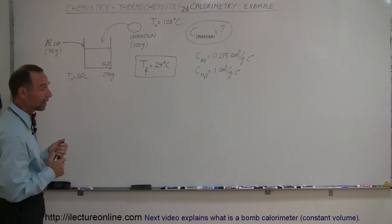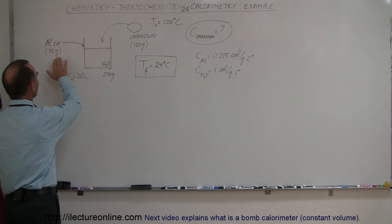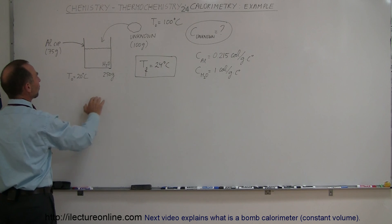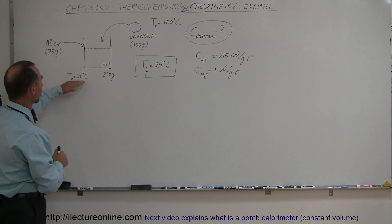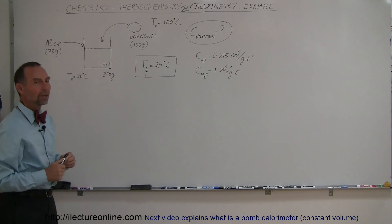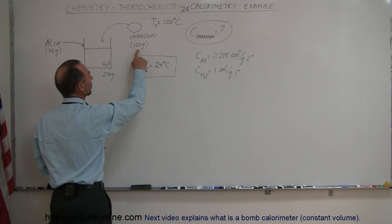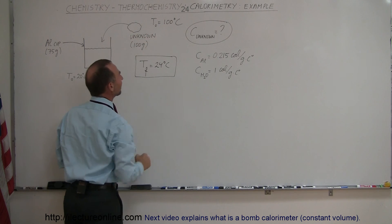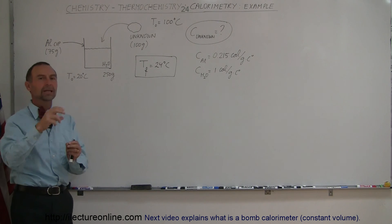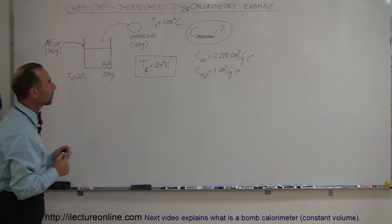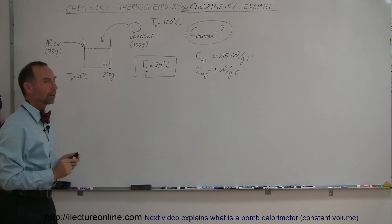So here is a simple calorimeter. We have an aluminum cup filled with water. The cup has a mass of 75 grams, the water has a mass of 250 grams, and the two together start at an initial temperature of 20 degrees centigrade. We're now going to take an unknown object that has a mass of 100 grams and starts at a temperature of 100 degrees centigrade — probably brought to that state by putting it in boiling water, waiting for thermal equilibrium, and then removing it and placing it into our calorimeter.